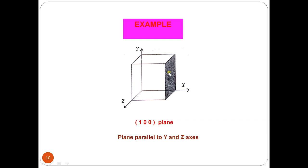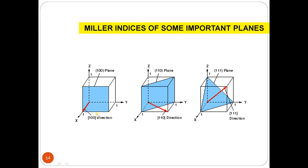Looking at different planes: a plane that cuts only the x-axis and is parallel to y and z has index (1 0 0). A plane that cuts both the x-axis and y-axis but is parallel to the z-axis — because its intercept along z is infinity — has index (1 1 0). Similarly, a plane that cuts all three axes at unit distances has intercepts 1, 1, 1; reciprocals are also 1, 1, 1; so its index is (1 1 1).